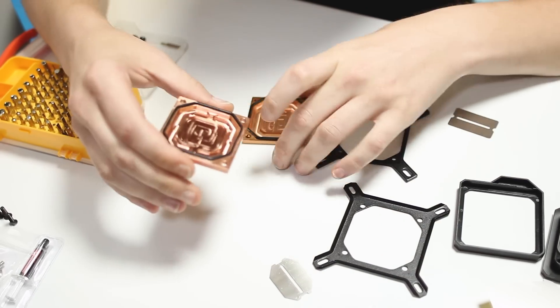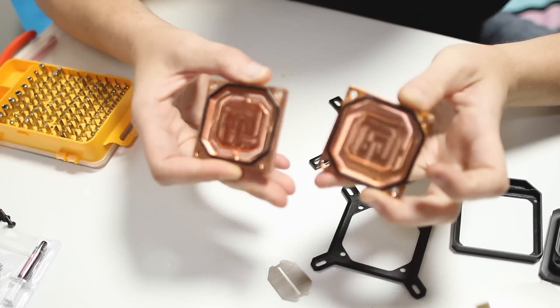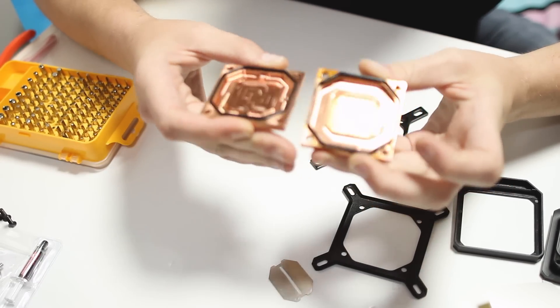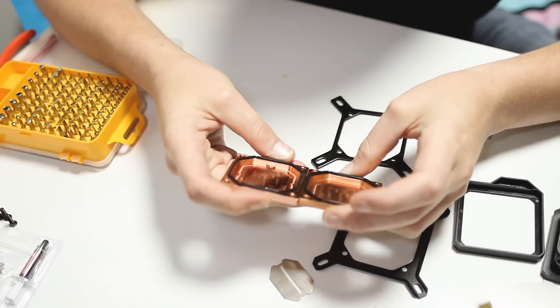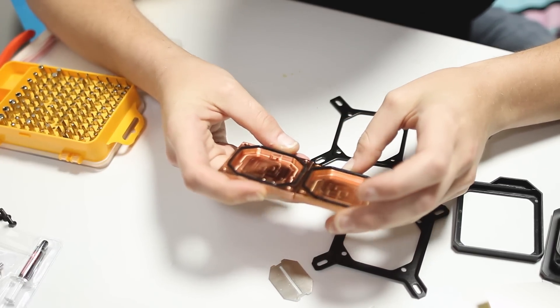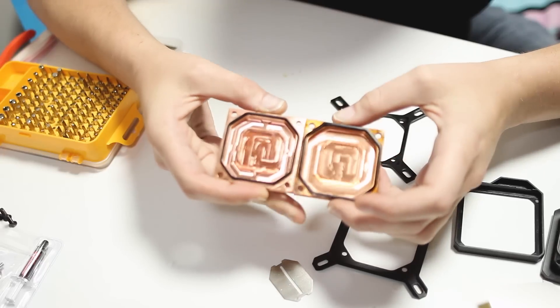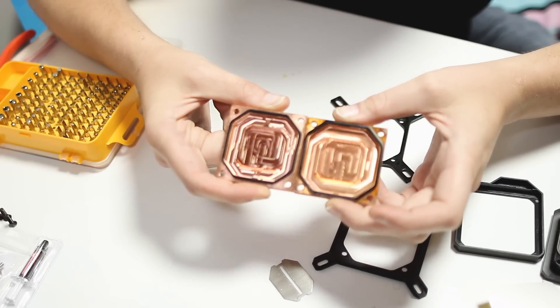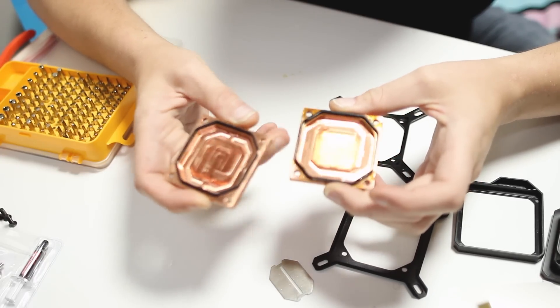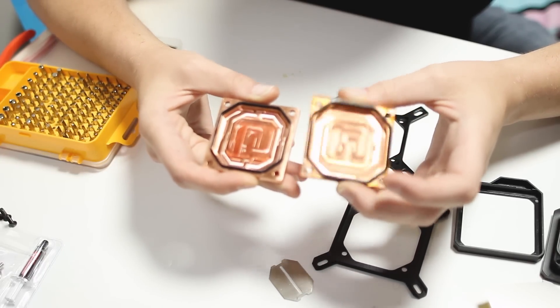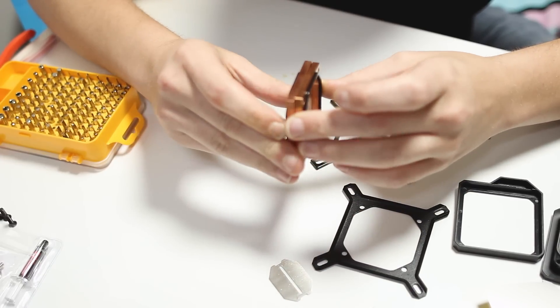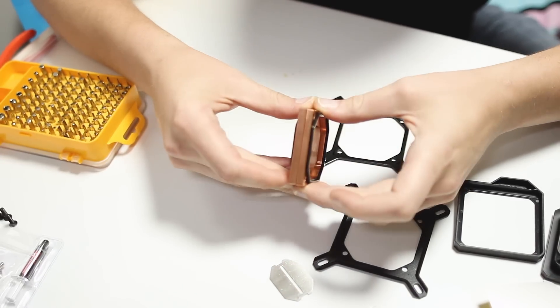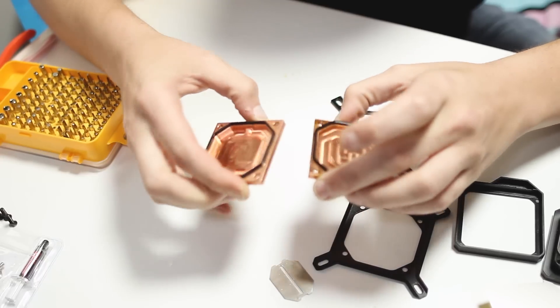All right, so here we have the two cold plates side-by-side, and they look slightly different. So this is the Velocity cold plate, this is the Supremacy Evo cold plate. They are exactly the same, or by eyeball, exactly the same.